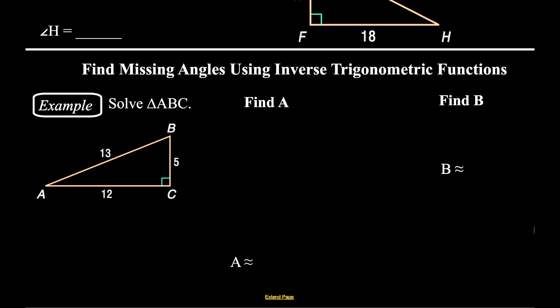Let's move on with our next objective: finding missing angles using inverse trig functions. If we want to solve triangle ABC, this time we are only given side lengths, so we are going to have to use inverse trig functions to find the angle measures. Angle C is 90, so we need to find angles A and B.